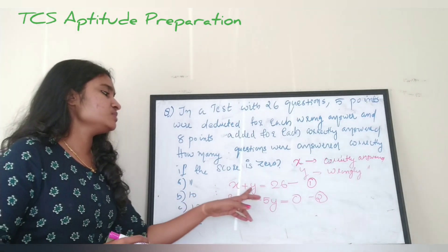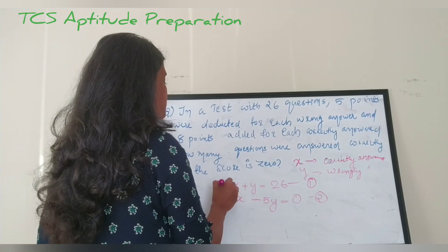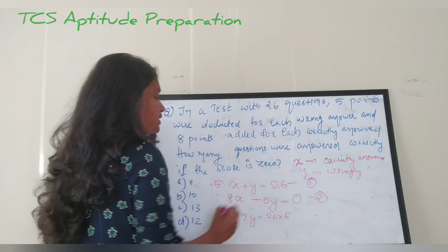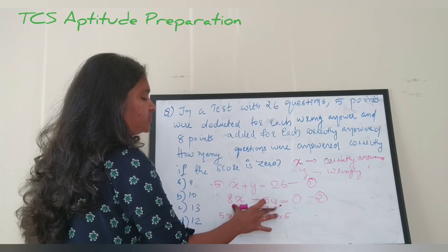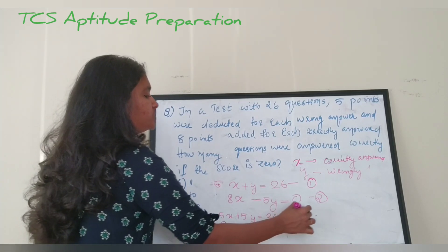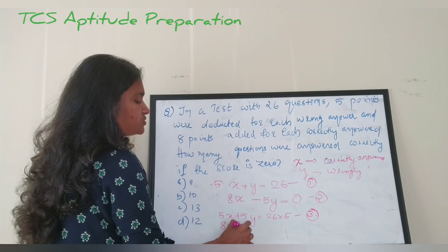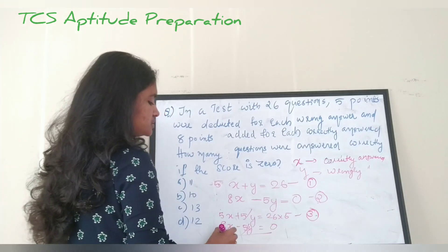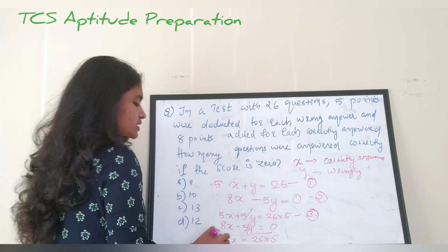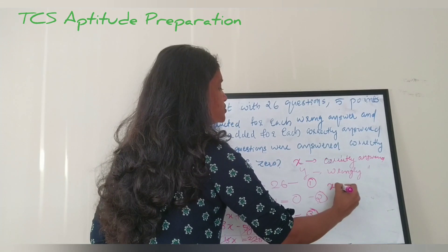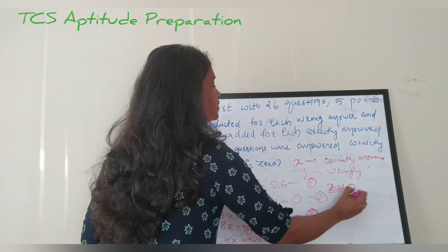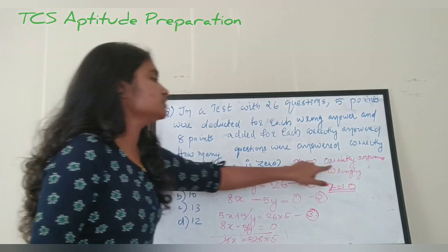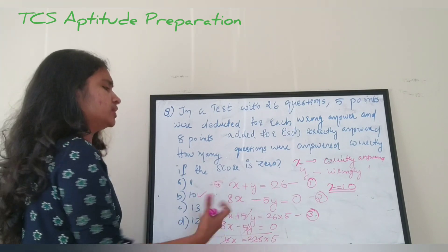To solve these two equations, multiply equation one by 5: 5x plus 5y equals 130. Add equation two — 8x minus 5y equals 0 — to this. The y terms cancel. So 8 plus 5 is 13, giving 13x equals 130. Therefore x equals 10. The question asks how many questions were correctly answered, so x equals 10 is our answer.